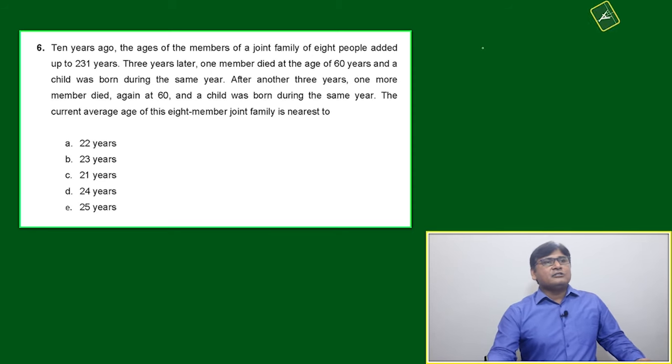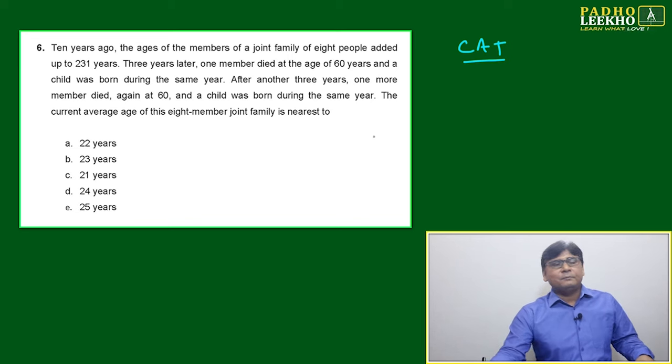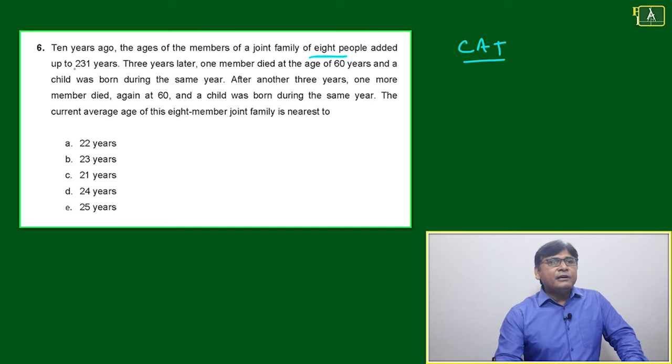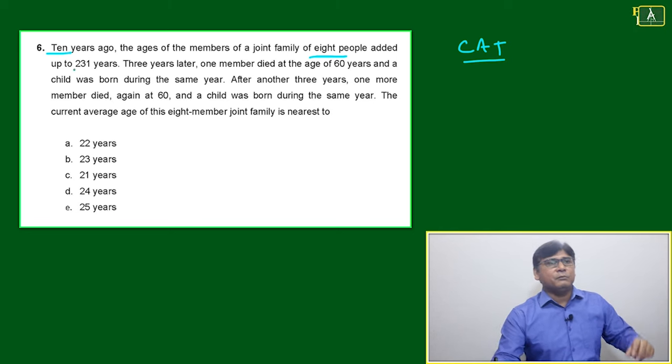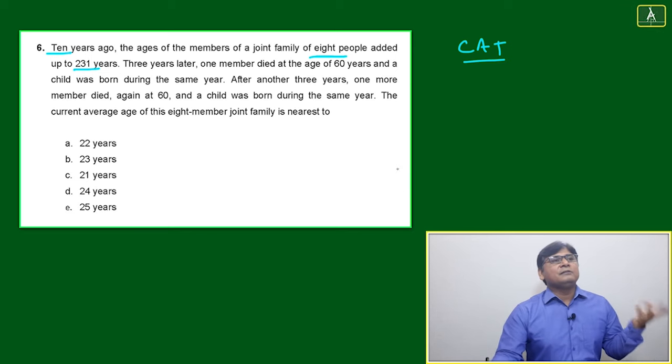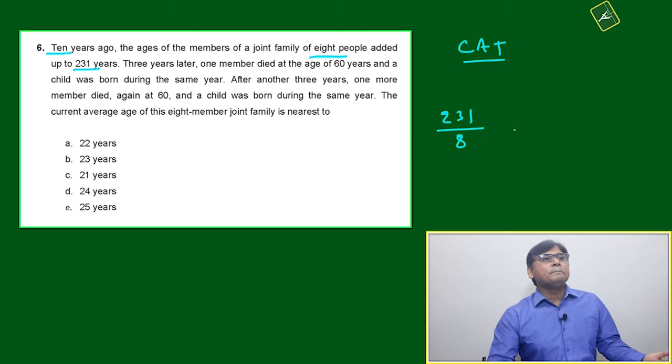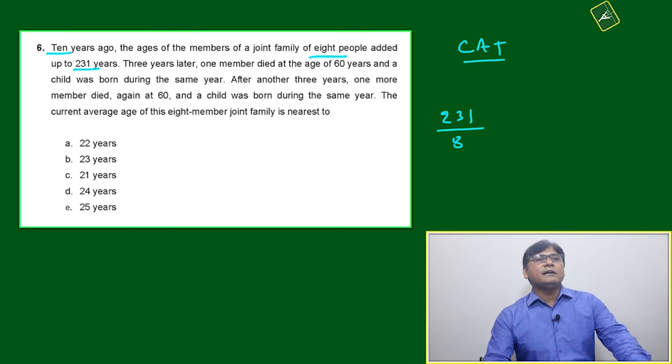Welcome to the next question. This is also a previous year CAT paper. The question is: Ten years ago, the age of the members of a joint family of eight people. The information here is one is 10 years ago, another is eight people in a family member. The average is 231, so first we have to find the average: 231 by 8. We'll calculate first, then we'll read the question.